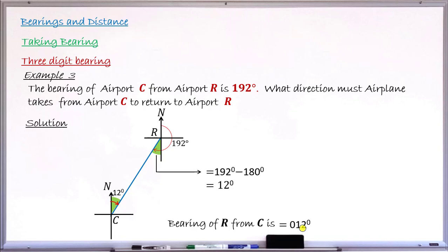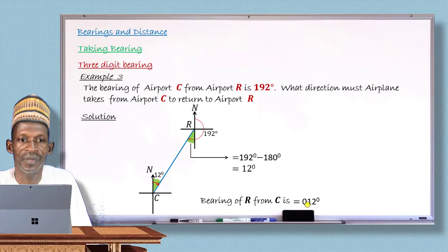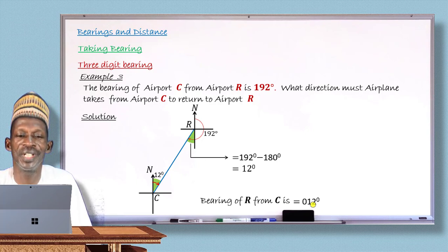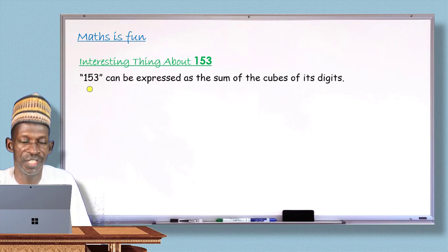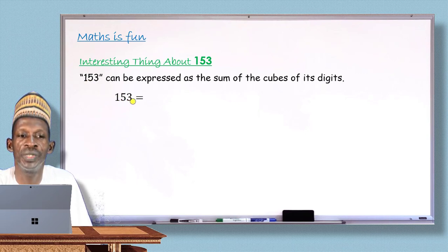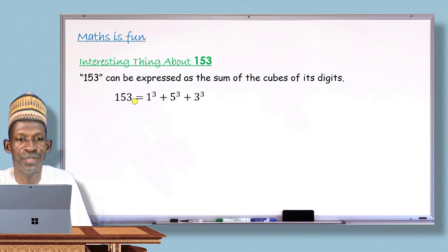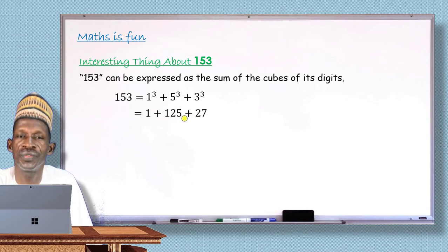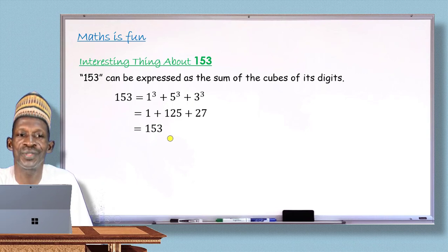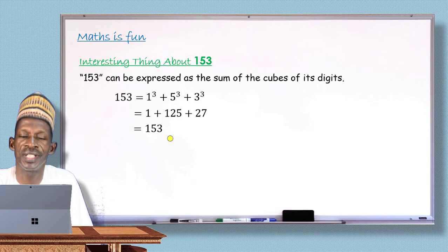In our next lesson, we learn how to take the second type of bearing, called the compass bearing. With this, I have come to the end of today's lesson. Now, let me tell you what is interesting about the number 153. It can be expressed as the sum of the cubes of its digits — 1, 5, and 3. That is: 1³ + 5³ + 3³ = 1 + 125 + 27 = 153. You get back the number itself. So 153 is a very interesting number. We will see more of these interesting numbers in subsequent lessons.